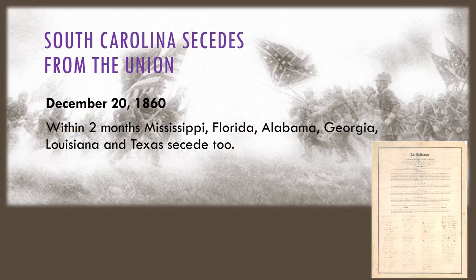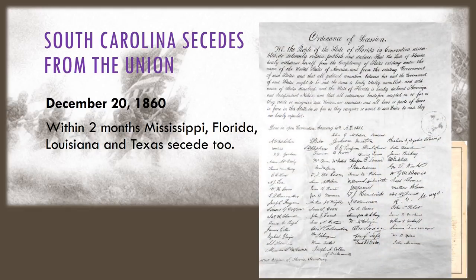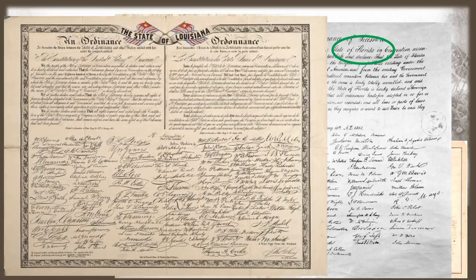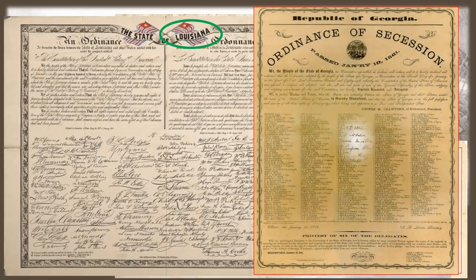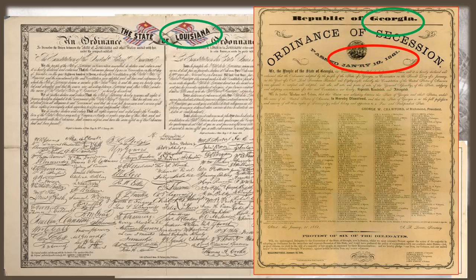Below you can see the actual secession letter that South Carolina sent. Within two months, Mississippi, Florida, Alabama, Georgia, Louisiana, and Texas had seceded too. The video shows secession letters from Florida, Alabama, Louisiana, and Georgia — Georgia's letter is dated January 19th, 1861.